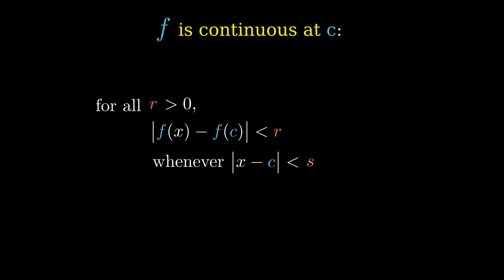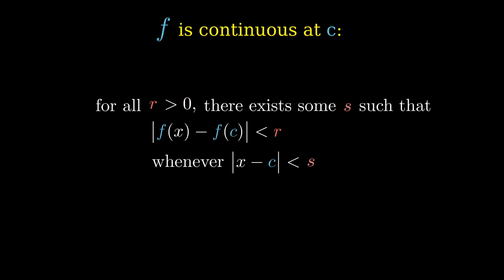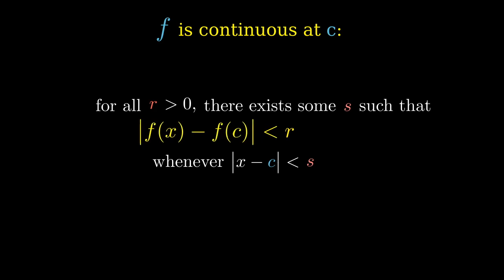For different values of r we may end up with different values of s, but what matters is that no matter what value we choose for r, as long as it is positive, there is some s such that whenever the distance from x to c is less than s, we are guaranteed that the distance from f(x) to f(c) is less than r.